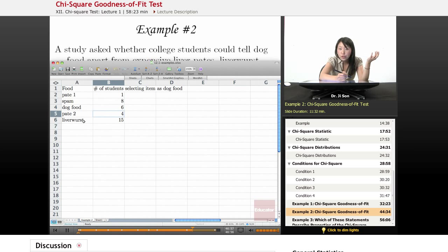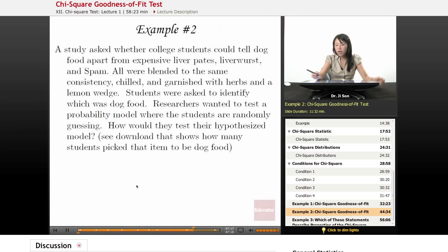They're actually just saying that one is dog food. And they have five different choices and they've chosen one of them as dog food. So out of five choices, a probability model that they're just guessing would mean that 20% of the time, they should pick pate 1 to be dog food, 20% of the time, they'll pick spam to be dog food, and so on and so forth. So let's draw that probability model. And by model, we often mean null hypothesis.